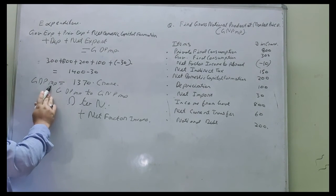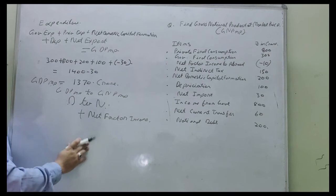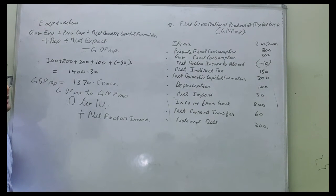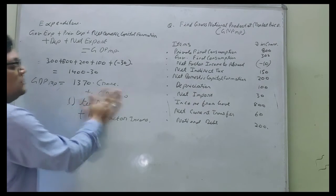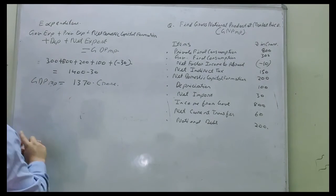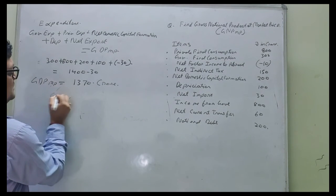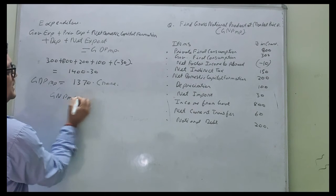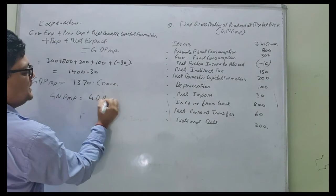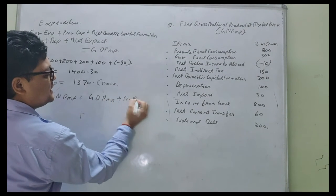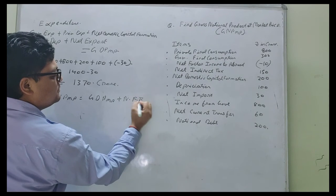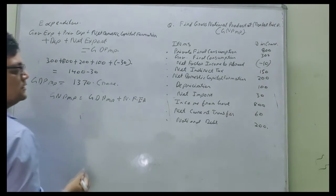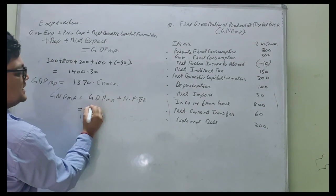From GDP MP to GNP MP, we have to just add net factor income from abroad to GDP MP. We will calculate it like this. GNP MP equals GDP MP plus net factor income from abroad. So GDP MP is 1370.